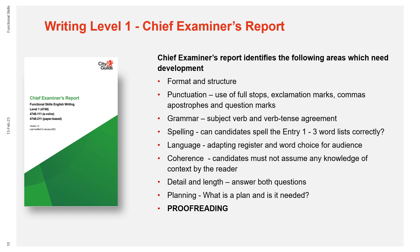For spelling, there's a reminder that level one subsumes all previous levels — for example, can candidates spell all the entry one to entry three word lists correctly? Language is about adapting register and word choice for the audience and coherence. Candidates must not assume any knowledge of context by the reader and should refer back to the question in their response. For detail and length, one of the biggest problems was candidates not answering both questions. And there's a section about planning — what is a plan and is it needed?